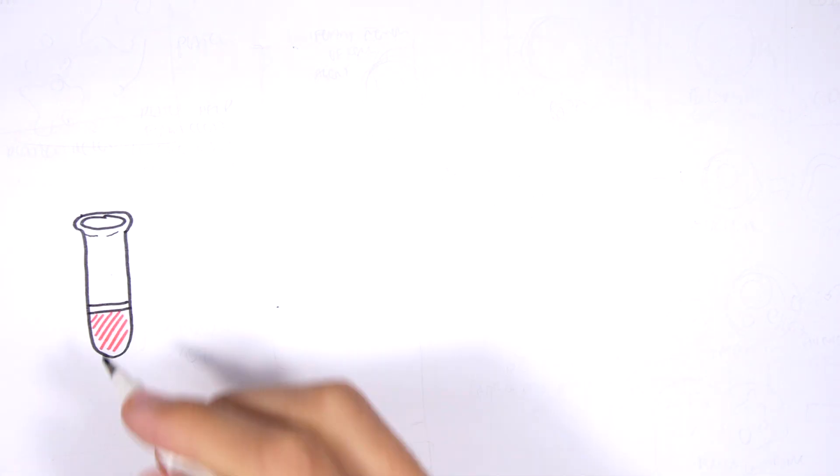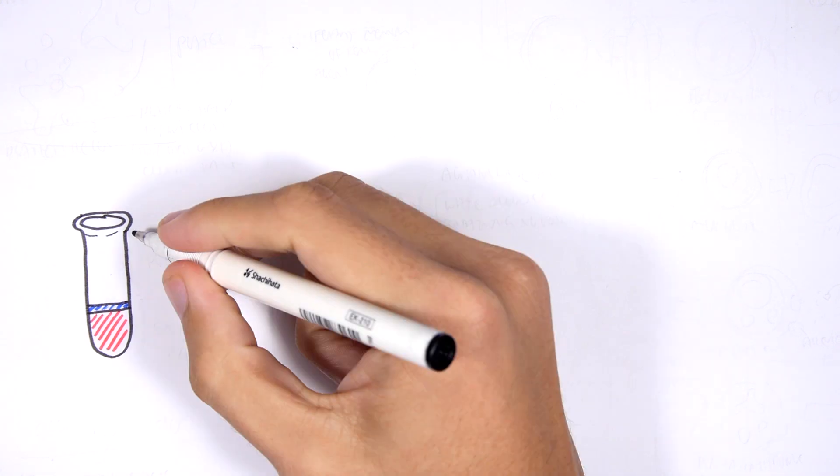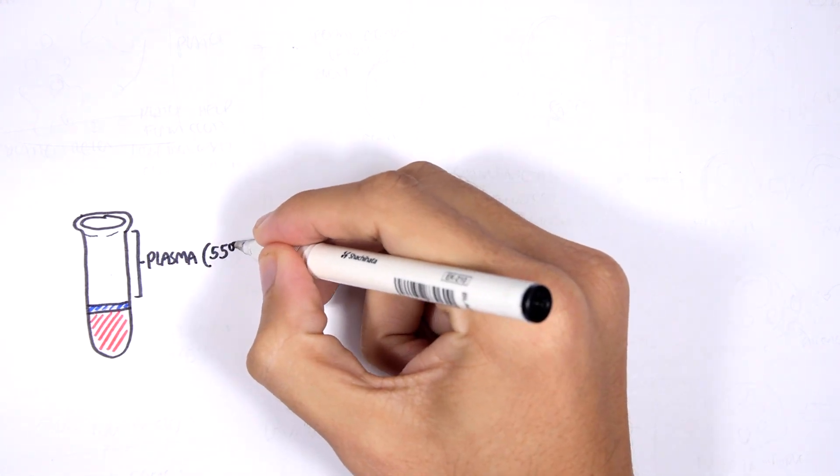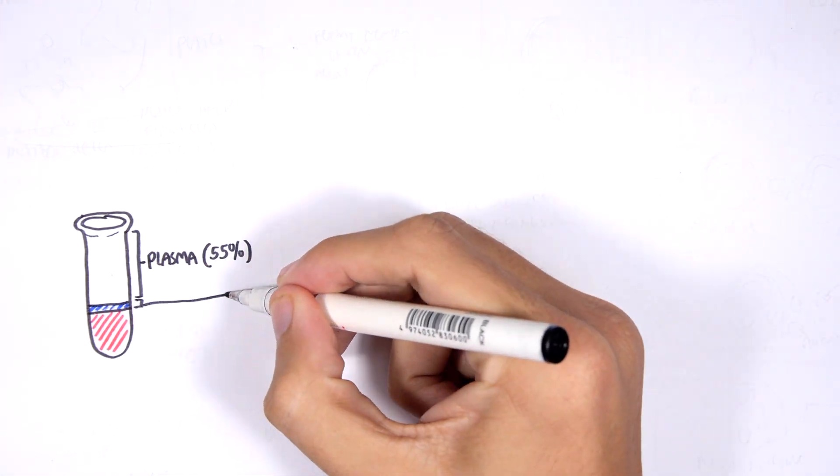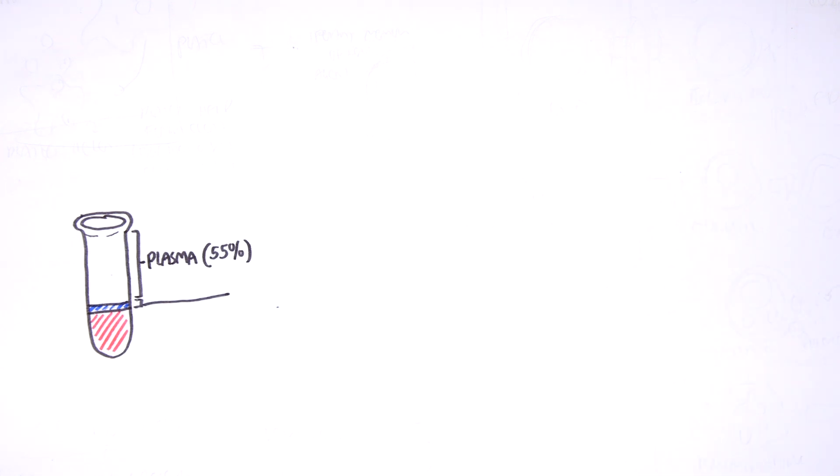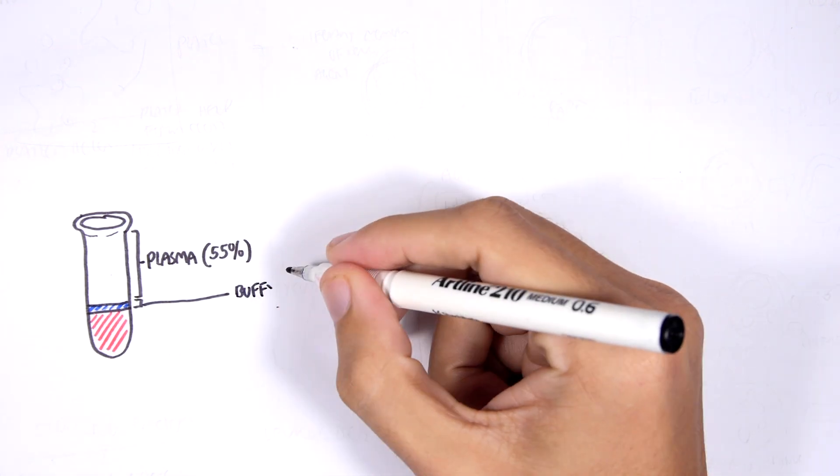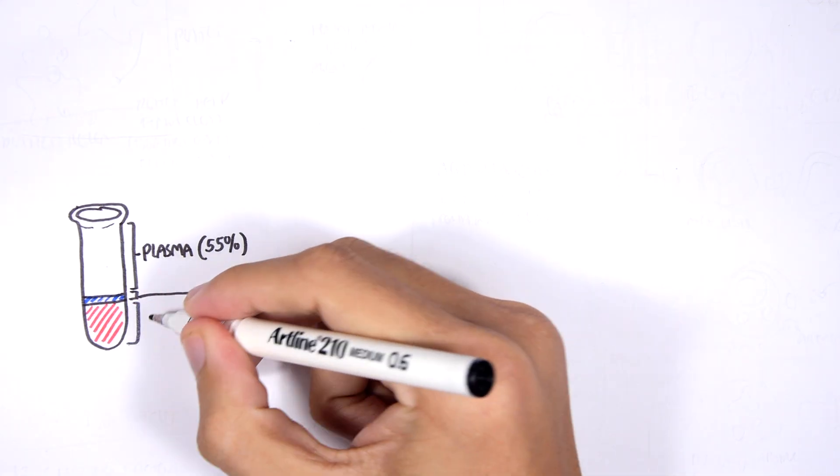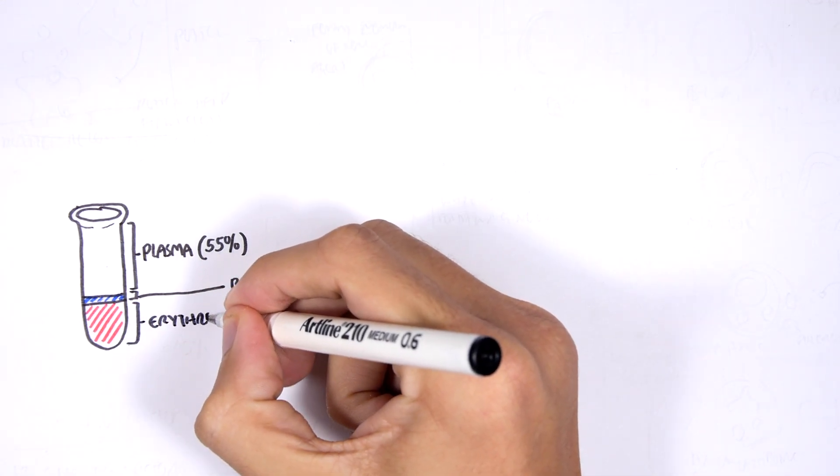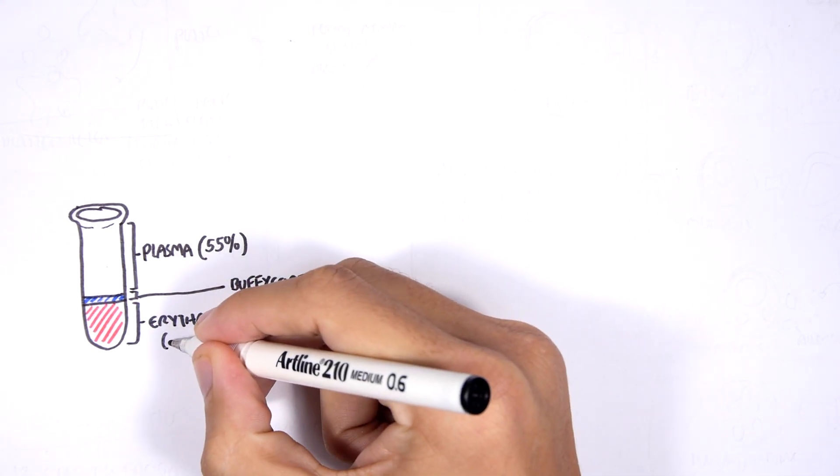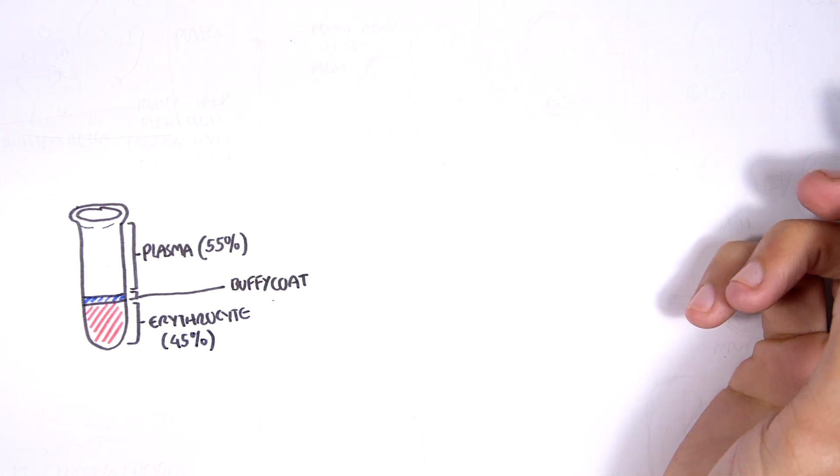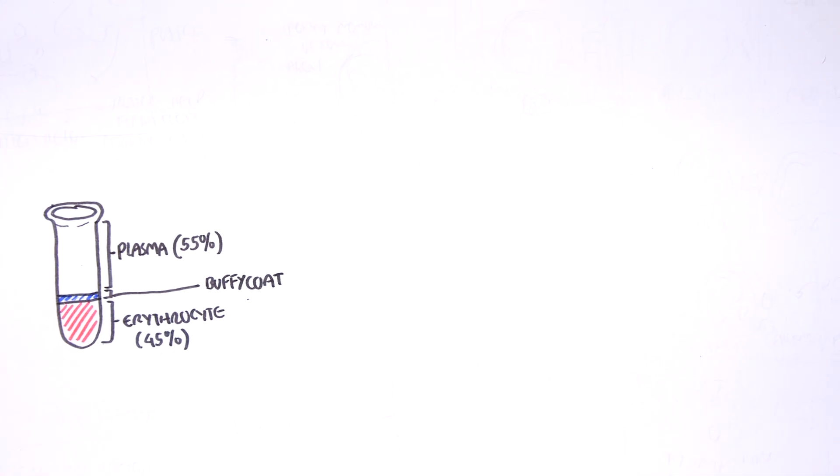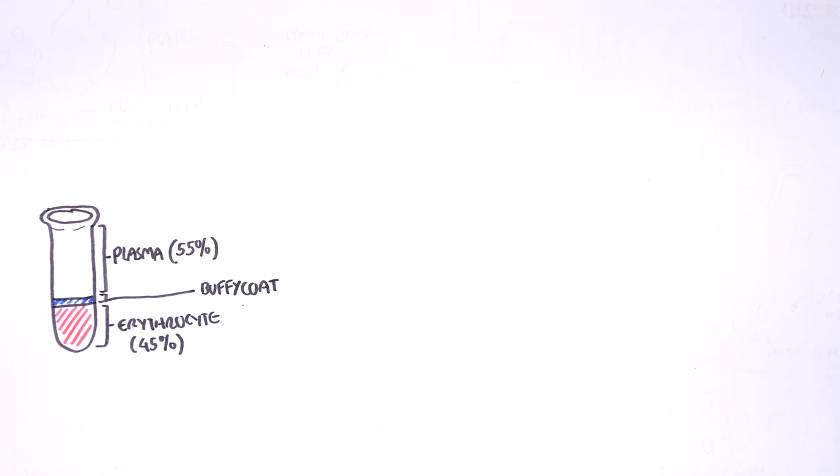The least dense layer on the very top is the plasma which makes up 55% of the total blood volume and this is essentially the water that makes up the blood. Then the second layer is the buffy coat layer which makes up less than 1%. And then we have the very dense layer which is at the very bottom which is essentially our erythrocytes, the red blood cells that make up 45% of the total blood volume.